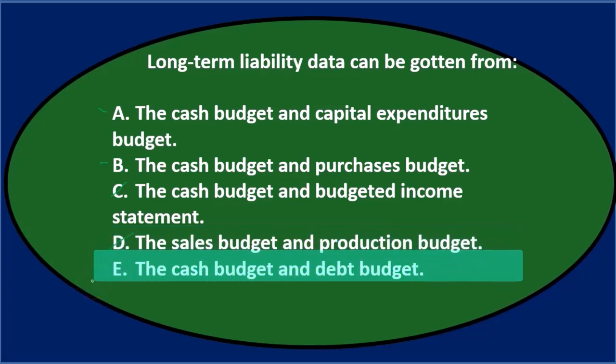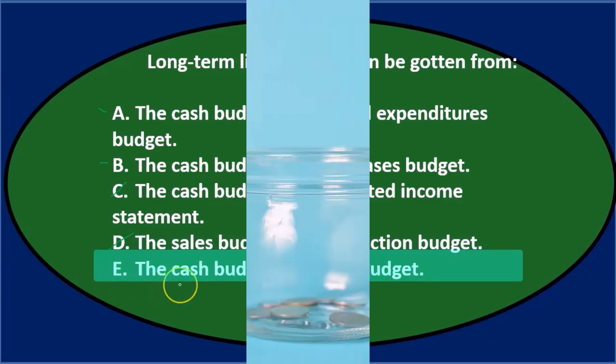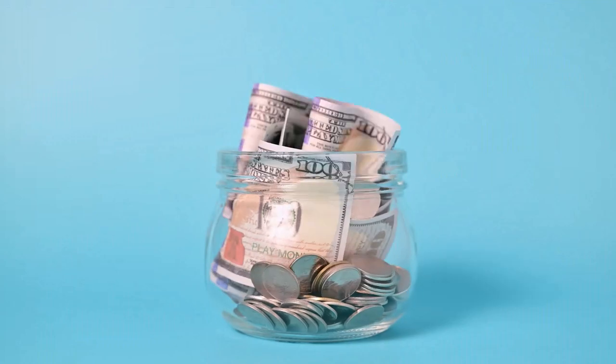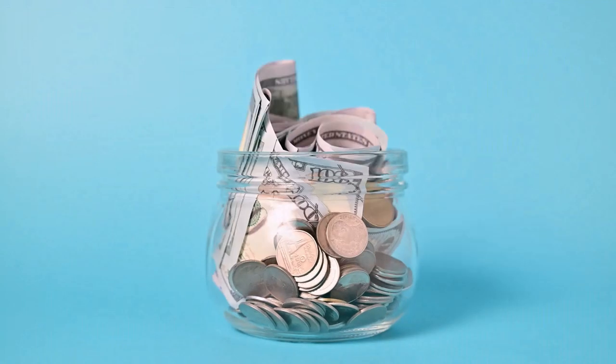Option E says the cash budget and the debt budget. That sounds kind of reasonable — you'd expect a cash budget and a debt budget to relate to long-term liability — so we'll keep E for now.